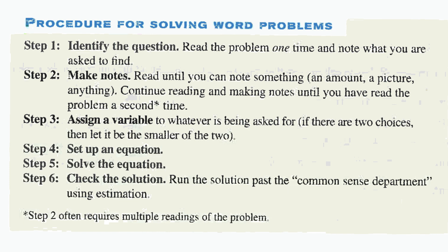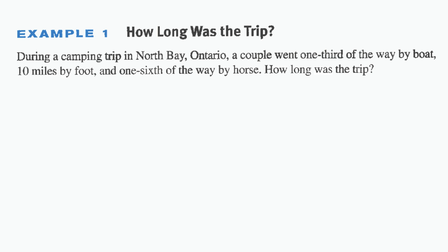We have six steps to solve a word problem. Step one: identify the question — what do we need to find? Step two: identify the important information we already have. Step three: assign a variable — often x, but it could be anything. The key is to keep yourself to one variable. Then we'll set it up, solve it, and check.